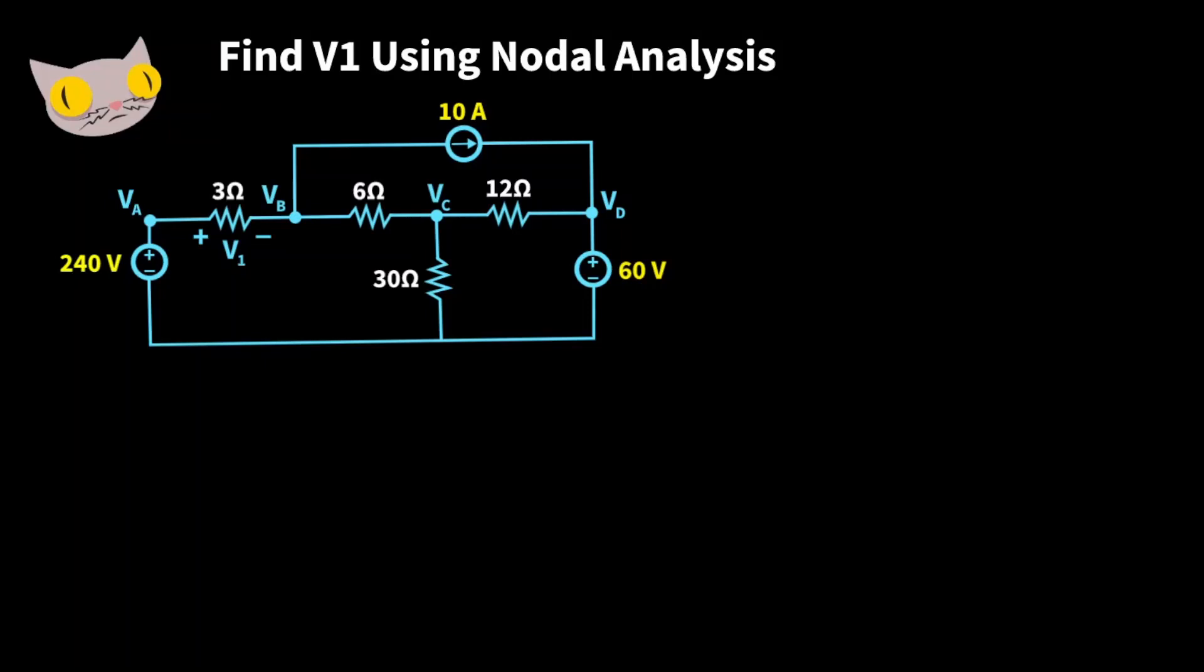In this problem let's find V1 using nodal analysis. To make things simple let's pick a node and give it a known reference value. So I added a node down here VE and I made it a ground zero voltage. Placing this ground node here is going to minimize the amount of work we have to do.